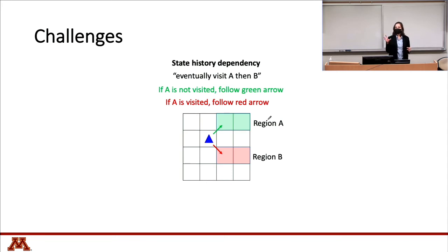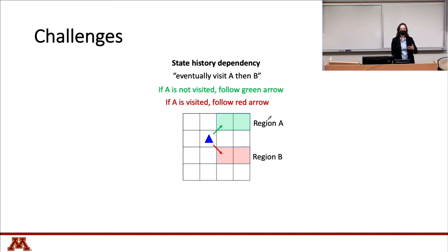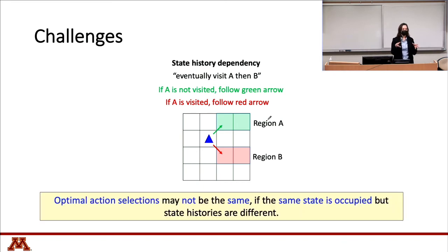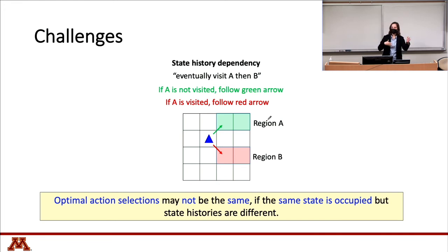State history is also crucial. For a task 'eventually visit A, then B,' if A has not been visited, the optimal action points toward region A; but if A has already been visited, the optimal action points toward region B. The same physical state can require different optimal actions depending on history, so we must track the state history to determine optimal behavior.